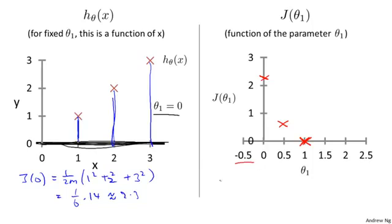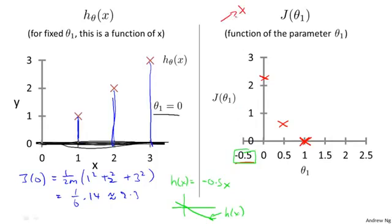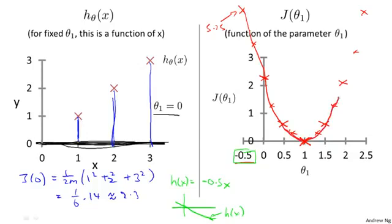It turns out you can have negative values of theta_1 as well. If theta_1 is minus 0.5, then h of x equals minus 0.5 times x — a hypothesis with a slope of negative 0.5. That produces really high error, working out to something like 5.25. By computing the range of values for different theta_1, you can slowly trace out what the function J of theta looks like.